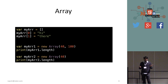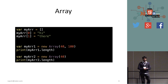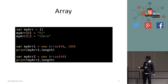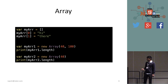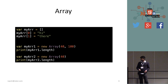The very basic data structure is an array. There are two ways of initializing an array. You can say my_array equal to square brackets and initialize index zero and one to some values. The other way is you can say my_array equal to new Array(40, 100).